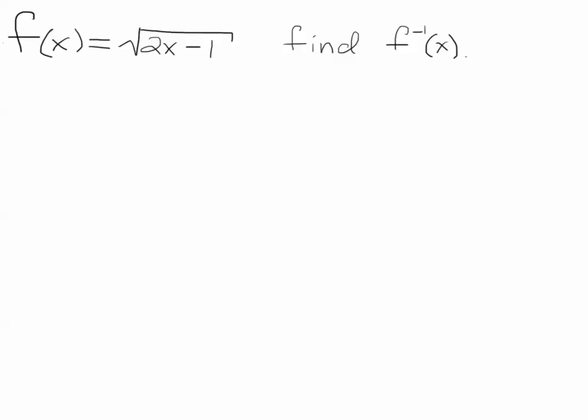So you can just by inspection look at this thing and think that, well, I'm going to square something, then I probably have to add 1 and then divide by 2, which are all the inverse operations involved with this function. Because we're taking a square root, we're subtracting 1, we're multiplying by 2, so we have to undo those.